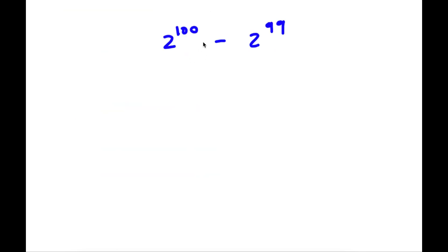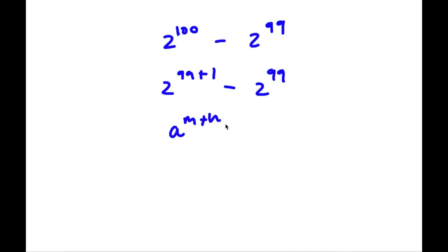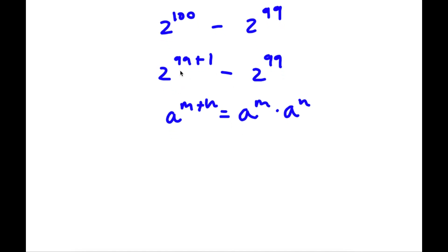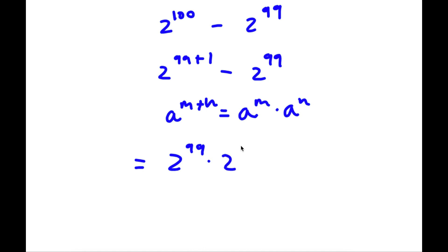Alright, so I have 2 to the power of 100 minus 2 to the power of 99. Now 2 to the power of 100 we can rewrite as 2 to the power of 99 plus 1, minus 2 to the power of 99. If I have something in the form a to the power of m plus n, this is equal to a to the power of m times a to the power of n. So 2 to the power of 99 plus 1 can be rewritten as 2 to the power of 99 times 2 to the power of 1.